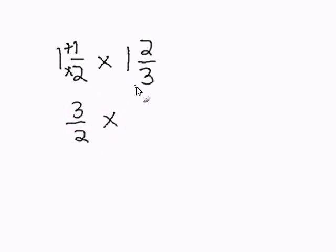You do the same thing with all the mixed numbers. 3 times 1 is 3, plus 2 is 5. The denominator remains the same.